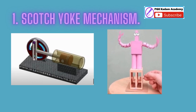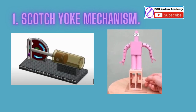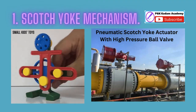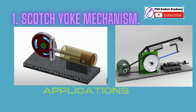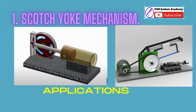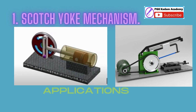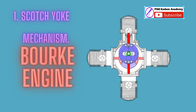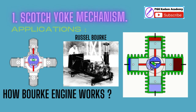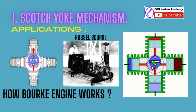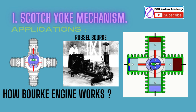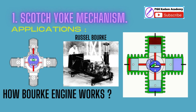Applications of the Scotch yoke mechanism include various uses from small kids' toys to pneumatic Scotch yoke actuators with high-pressure ball valves. They are also used in syringe control and hacksaws. One of the best applications is the Burke engine — a two-stroke engine designed by Russell Burke, in which two pistons are horizontally placed and are 180 degrees out of phase, ensuring no interference.